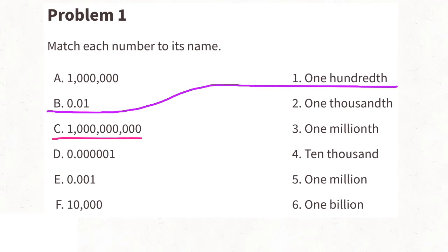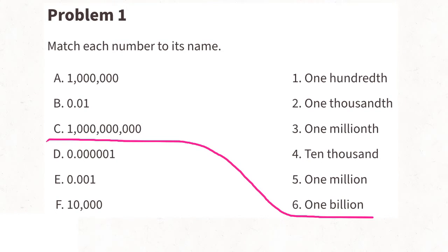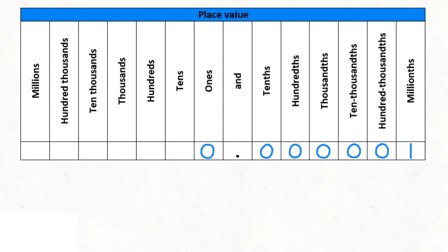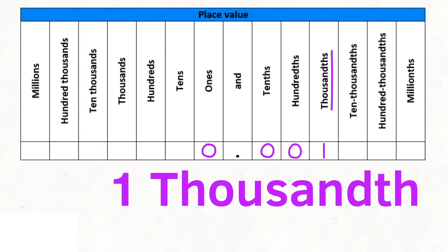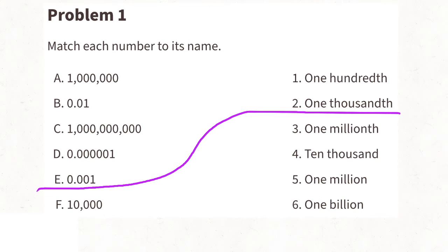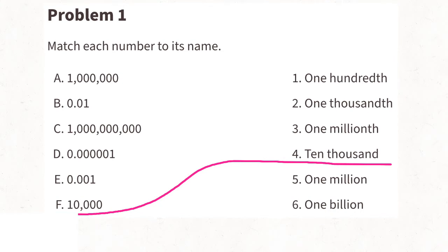C: one followed by nine zeros, and to the right of the nine zeros is the decimal point. So that would be one billion. C matches with six, one billion. D: zero point, and then there are five zeros followed by a one. That would be one millionth. D matches with three. E: 0.001 — the decimal point and then two zeros to the right followed by a one. That would be one thousandth. E matches with two. F: one followed by four zeros, then a decimal point. That would be ten thousand. F matches with four.